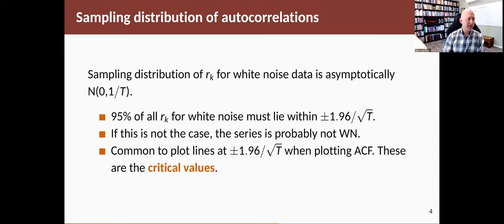the distribution of sample autocorrelation coefficient for any k is asymptotically normal with mean zero and variance one over T. That means that 95% of the time you would expect those rk values to lie within plus or minus 1.96 divided by the square root of T. That's 1.96 times the standard deviation.